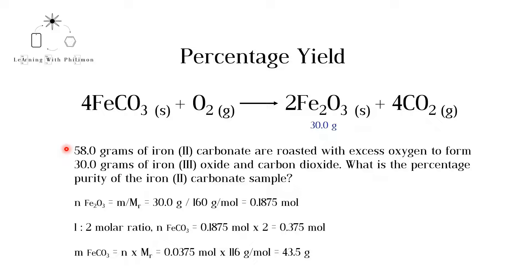Now let's see how this equation can be applied in a stoichiometry question. A typical question on percentage purity would look like this. 58.0 grams of iron II carbonate are roasted with excess oxygen to form 30.0 grams of iron III oxide. What is the percentage purity of the iron II carbonate sample?